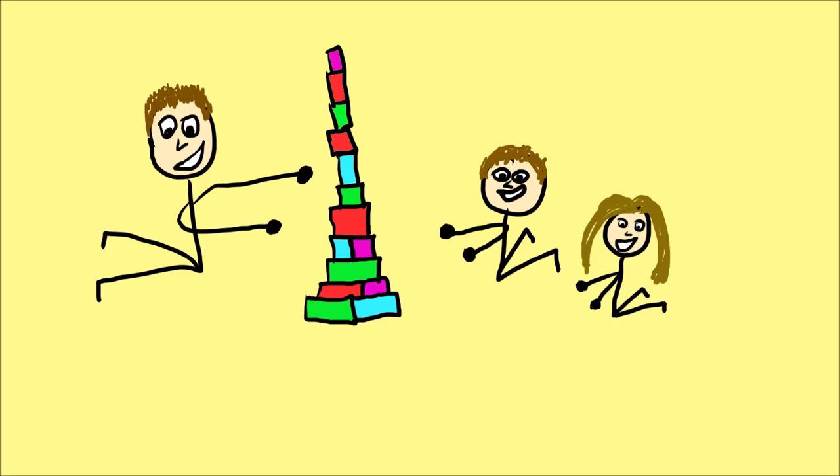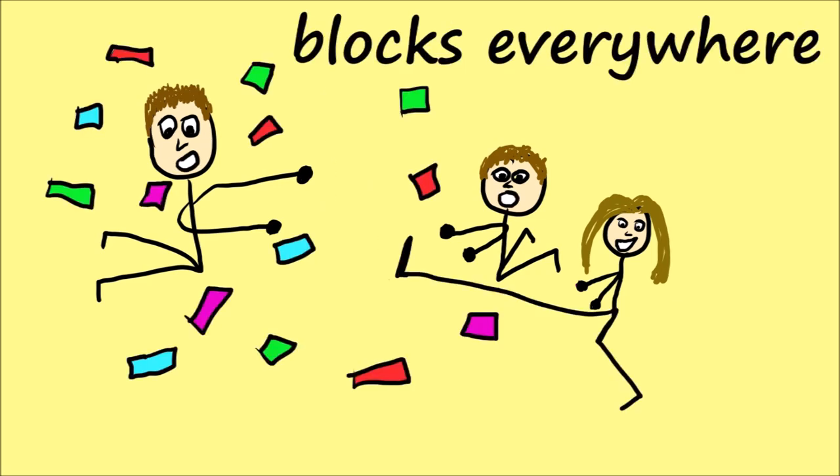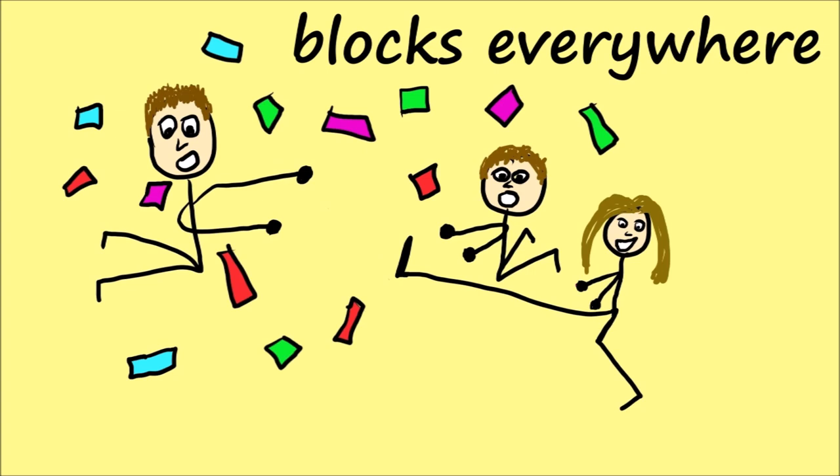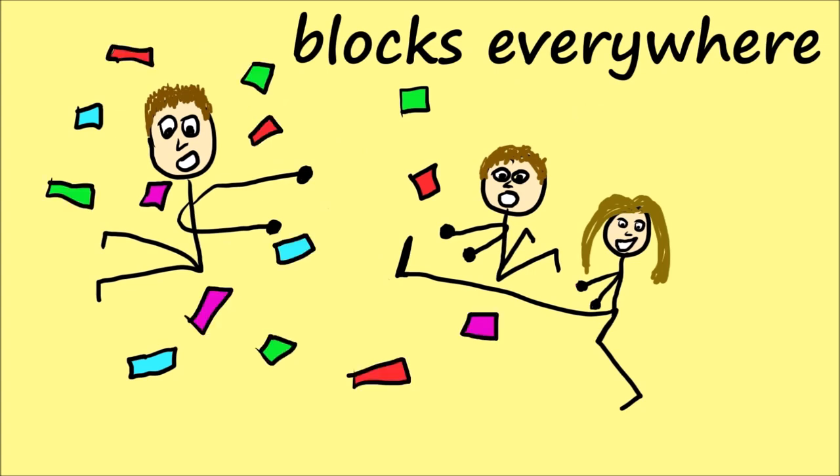When we build a tower from building blocks, there is only one state that we define as a tower. Every other outcome results in blocks everywhere. Whether those blocks are all over the floor, or all over the bed, or leaning up against one another, or a mix of all three, is irrelevant. We classify all these states as not a tower.